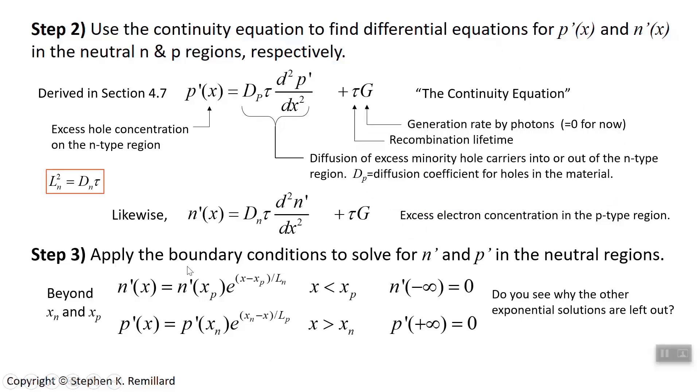Apply the boundary conditions. The boundary conditions, it says that at x equals x sub p, you know what n prime is. It's n prime of x sub p. So how does that influence the way you write the solution?